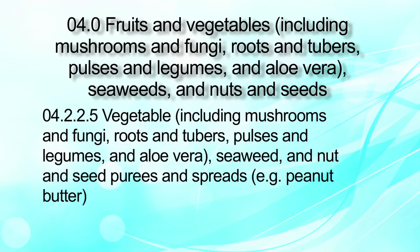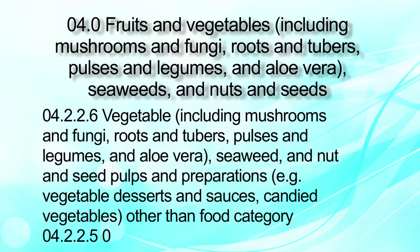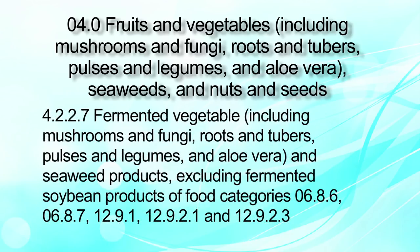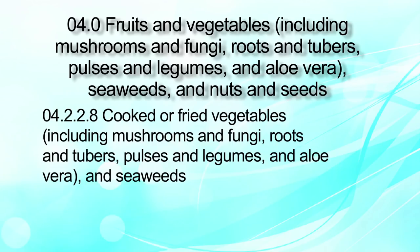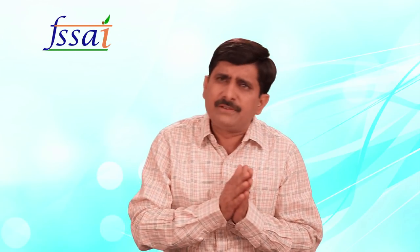Continuing with category 4 fruits and vegetables, it includes vegetables, nuts, seaweeds and sprouts. Category 4.2.2.6 includes vegetable, seaweed and nut and seed pulp preparations. Category 4.2.2.7 covers fermented vegetables including seaweeds and mushrooms excluding fermented soybean products of category 6.8.6. Category 4.2.8 covers cooked or fried vegetables and seaweeds. In short, the fruits and vegetables category number 4 has very detailed sub-categories, and all products globally can be placed in one of these particular references.